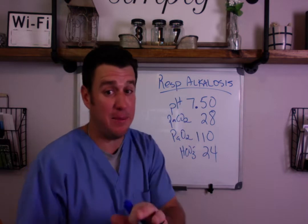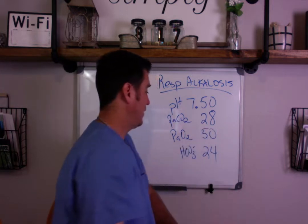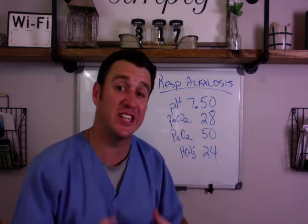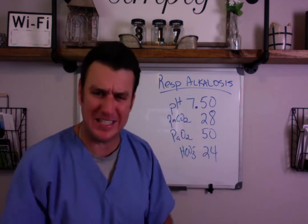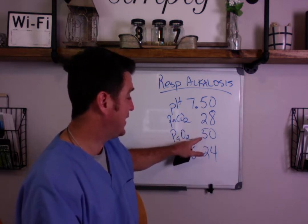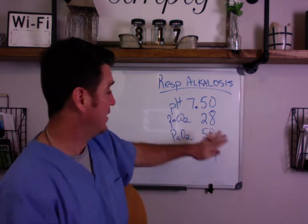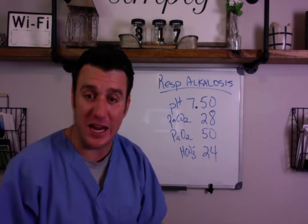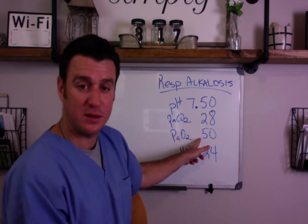Let's go back to the first example. With that blood gas, the patient is acutely hyperventilating, and the reason is that they are acutely hypoxemic. In this case, to fix the problem you need to fix the PaO2. When you fix that, you will fix the acute alveolar hyperventilation. So in this case, you should not be thinking about adding mechanical dead space — it's not going to fix the problem. The patient is hyperventilating because they are hypoxemic.